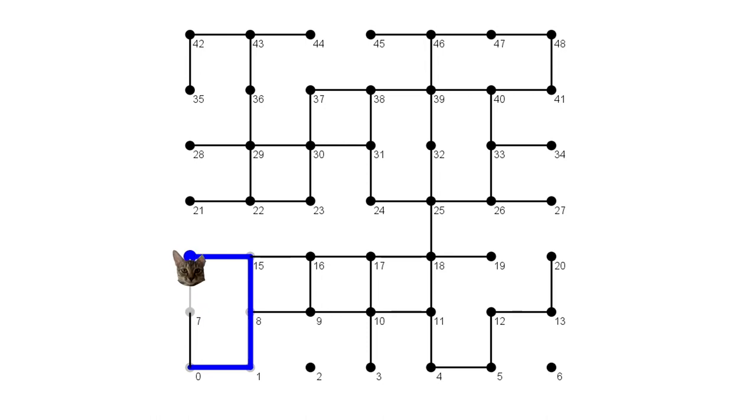So it starts to backtrack until it has a choice again. No choice here. From 15, the cat could backtrack some more, but it doesn't have to. Because there's a choice it hasn't tried yet: Vertex 16. So it goes to the right. And again, it keeps going deeper as far as it can, until there are no new choices left.